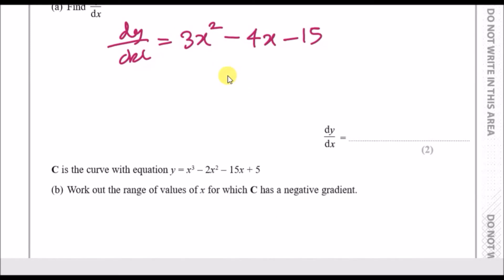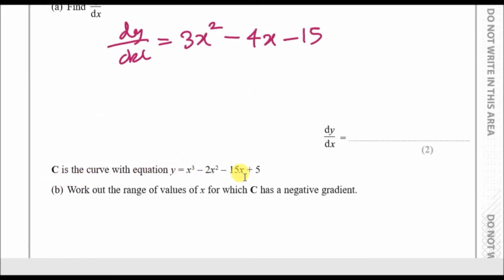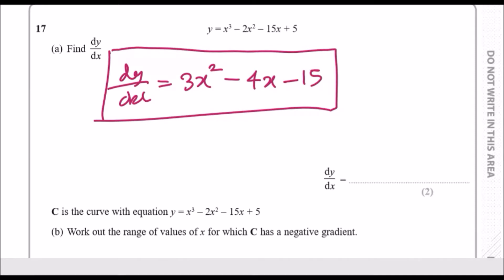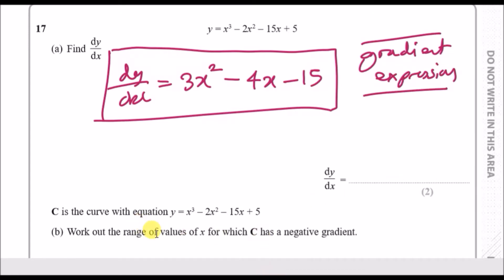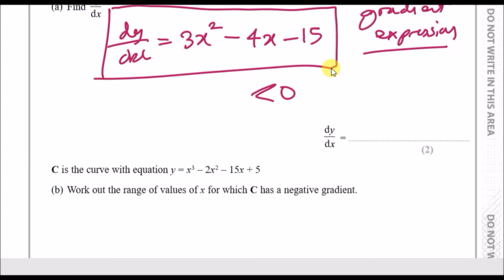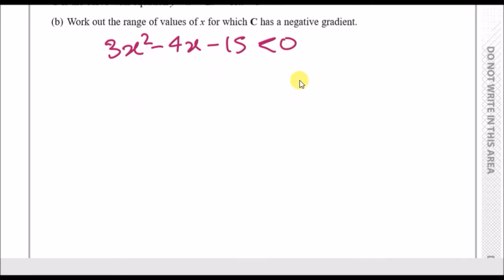Part C uses the same curve. We need the range of values for which the curve has a negative gradient. The key point is that dy/dx is the gradient expression. For the gradient to be negative, we need dy/dx to be less than zero. So we set 3x squared minus 4x minus 15 less than zero.